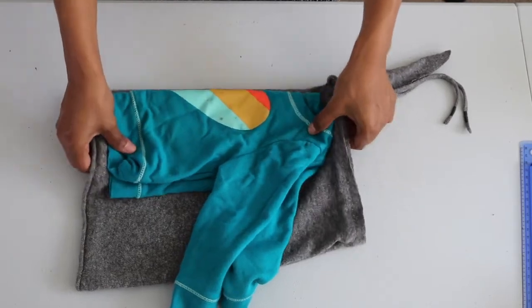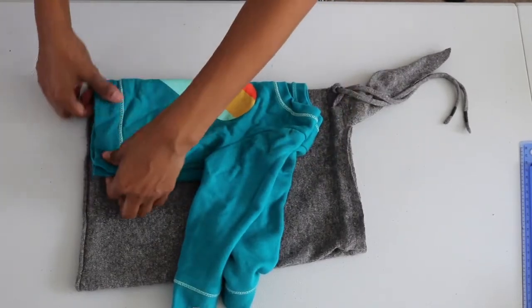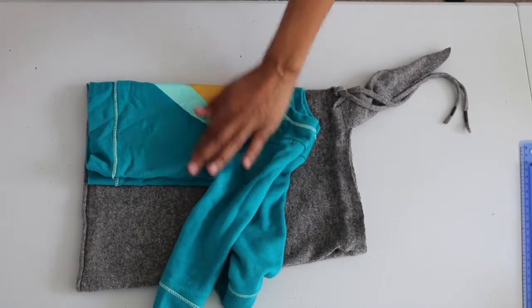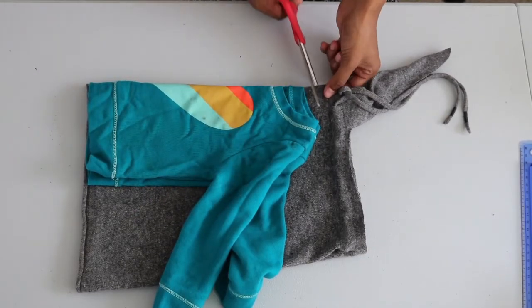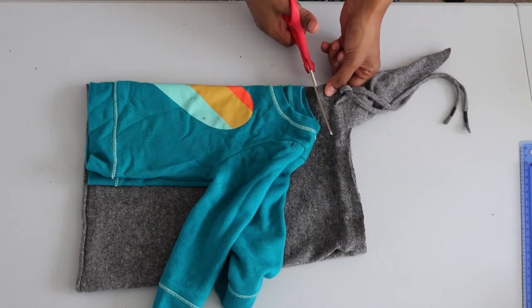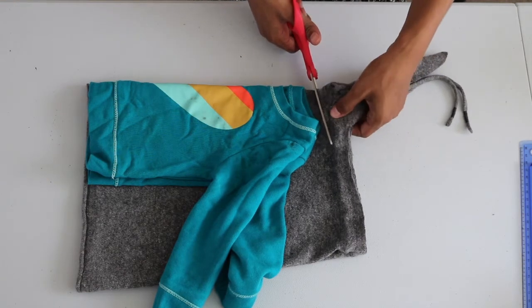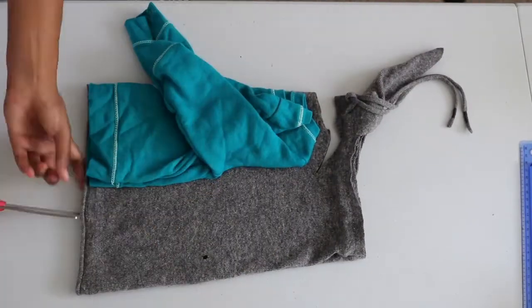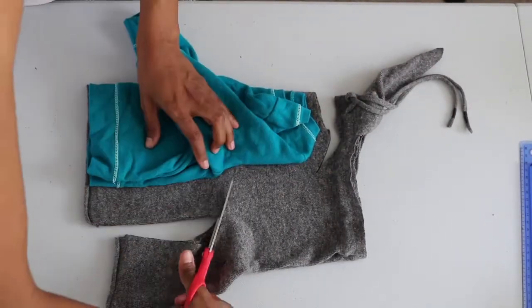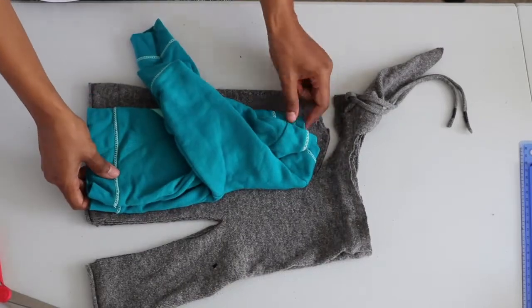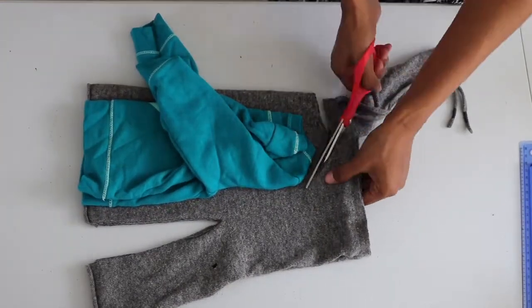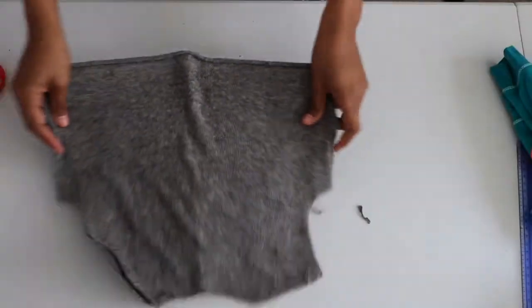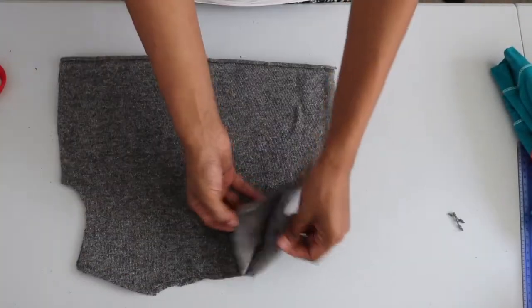Again, making sure that I'm using maximum amount of fabric here. Then I just went ahead and cut around the sweater along with the one inch seam allowance. And here I have my front and back piece.